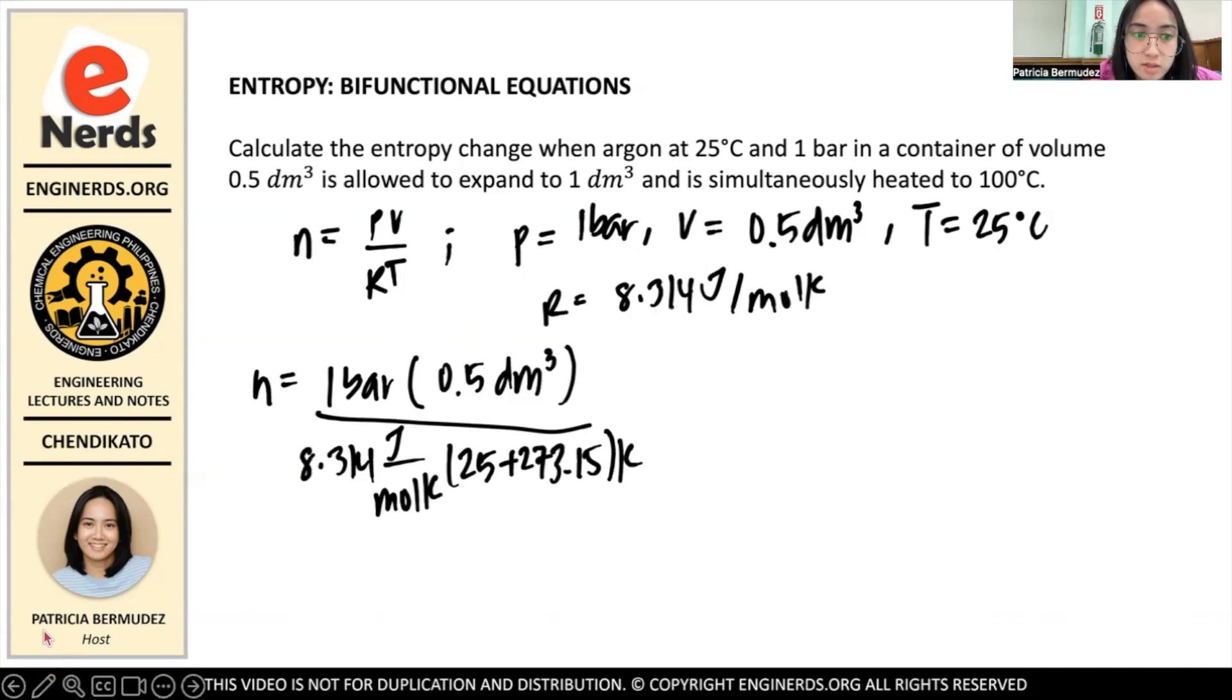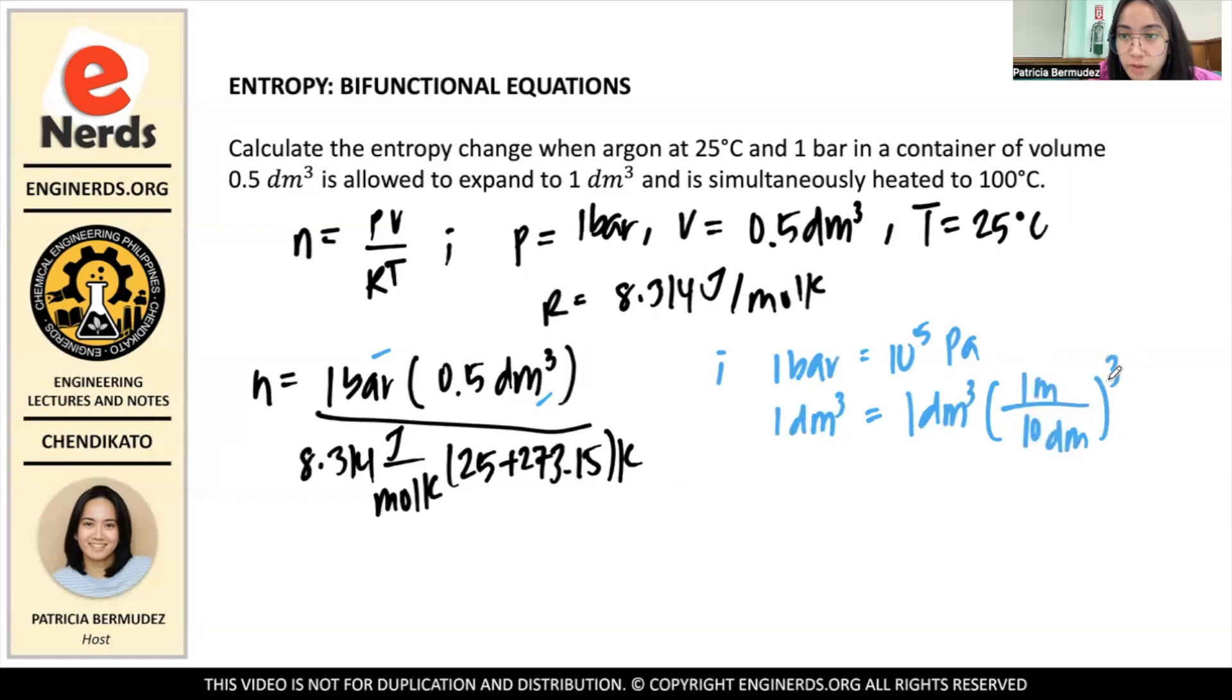But we see that the units are inconsistent - you can't cancel J with bar·dm³. So we have to convert these two. We know that 1 bar equals 10⁵ Pascals, and 1 dm³ equals 1 dm³ times the conversion factor (10 dm = 1 meter), cubed, which becomes 1 dm³ equals 1/1000 meter³, which equals 0.001 meter³.